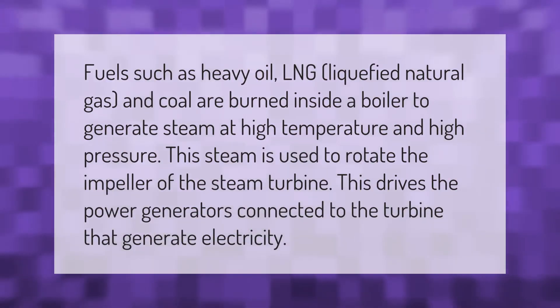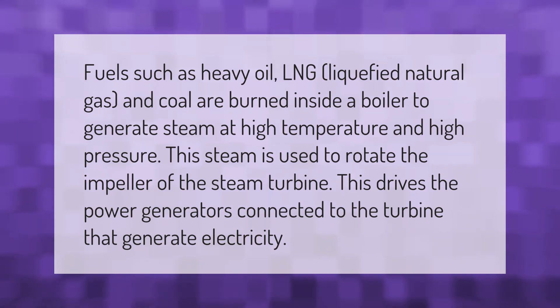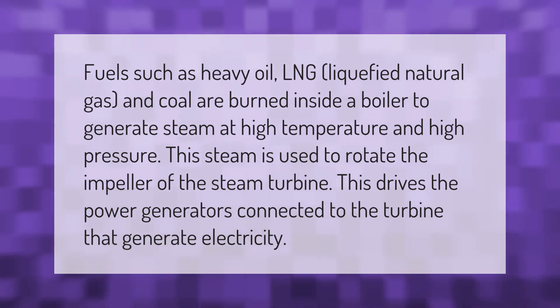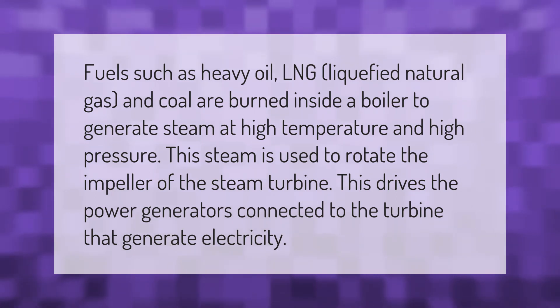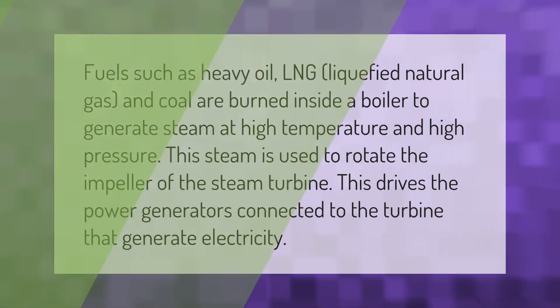Fuels such as heavy oil, LNG (liquefied natural gas), and coal are burned inside a boiler to generate steam at high temperature and high pressure. This steam is used to rotate the impeller of the steam turbine, which drives the power generators connected to the turbine that generate electricity.